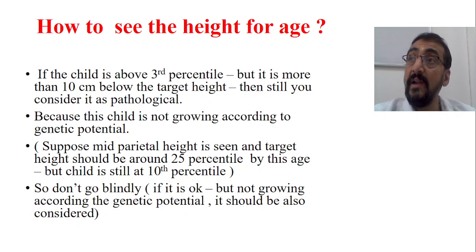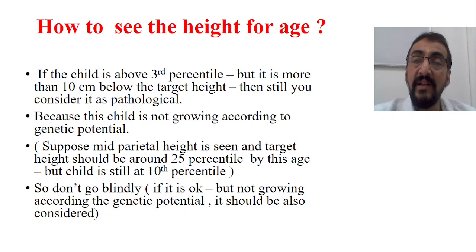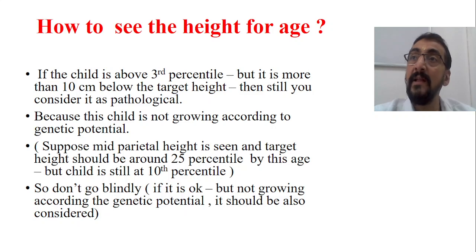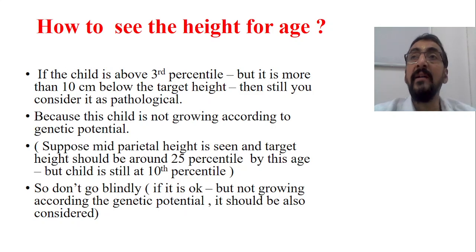This child, although he is growing above the third percentile and above the level of short stature, is not growing according to its genetic potential. His genetic potential is more than that — he has to grow according to the genetic potential. But as this child has almost 15 cm less than the estimated height level, he is not growing according to the genetic potential. Therefore it should be considered under pathological short stature. This is one important thing.